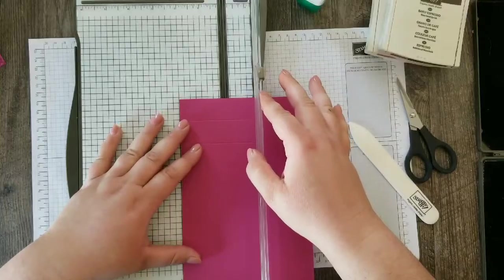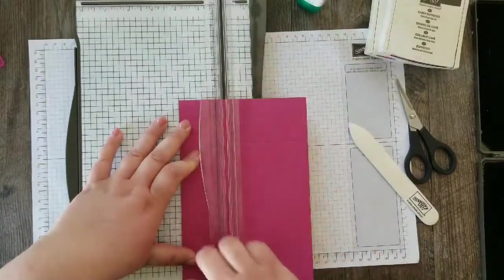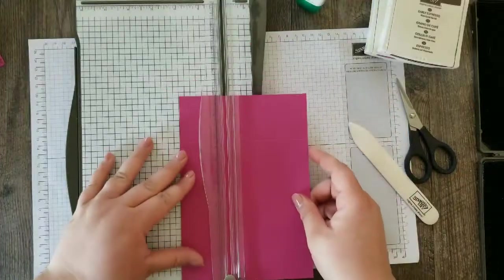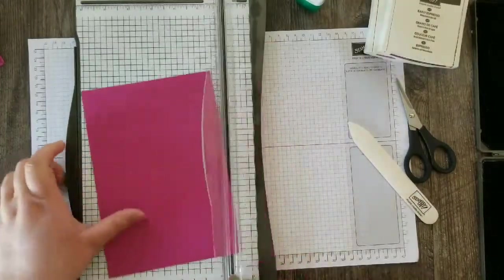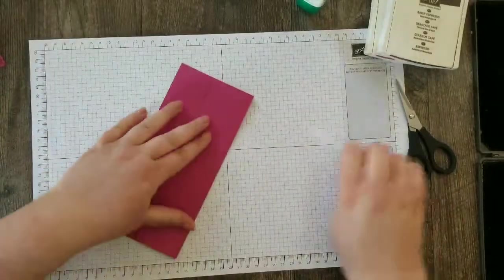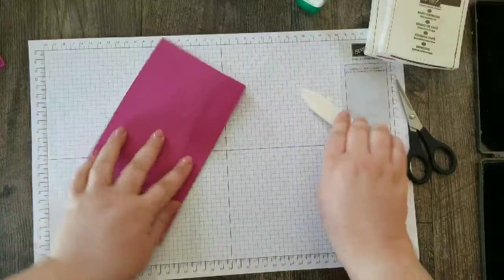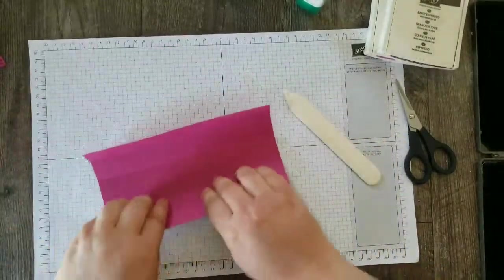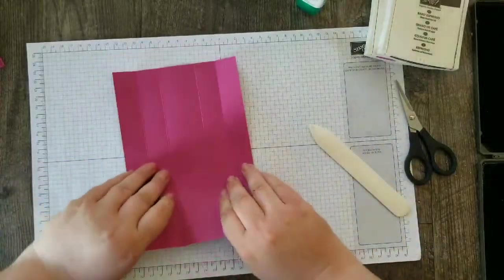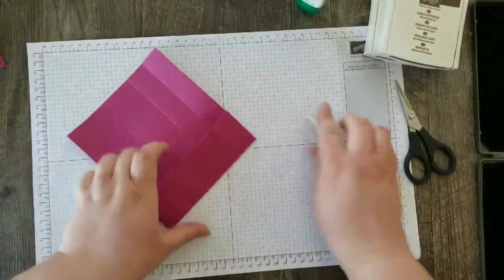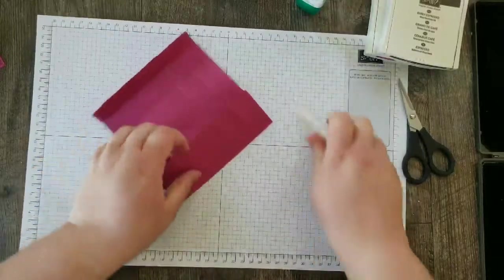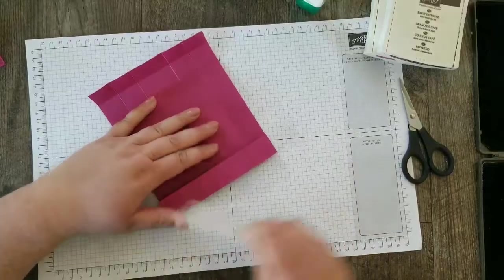I love the Stampin' Trimmer because you get a cutting blade and a scoring blade. So scoring for these 3D projects is really simple. And again, I am now scoring at 2 inches all around. We already scored at 1 and now we're coming in at 2. So I'm going to fold on all the score lines and burnish those edges so we get a nice crisp fold.